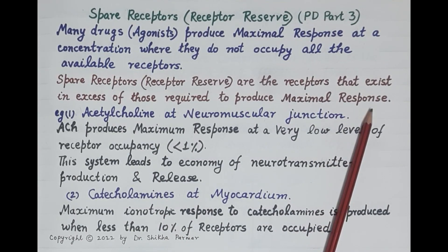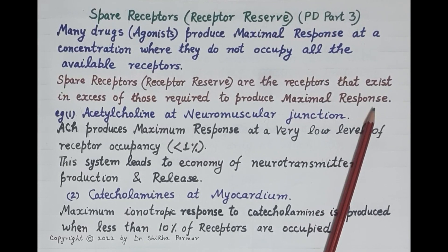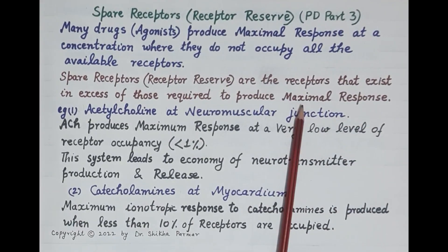Spare receptors or receptor reserve are the receptors that exist in excess of those required to produce maximal 100% response by the agonist. For example, if a tissue has 1000 receptors but the agonist produces its maximal response by binding to and activating only 100 receptors, then 900 receptors are spare or reserve receptors.